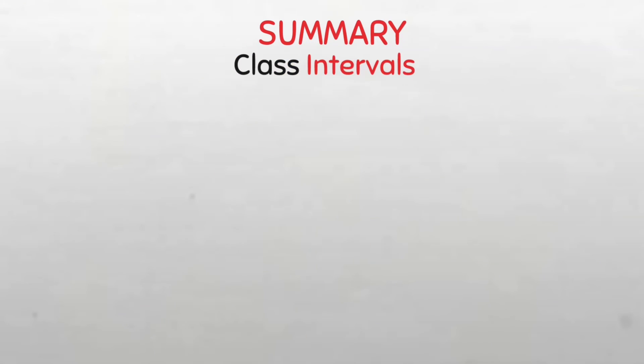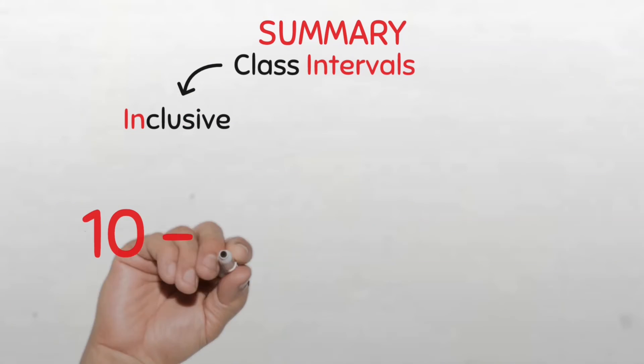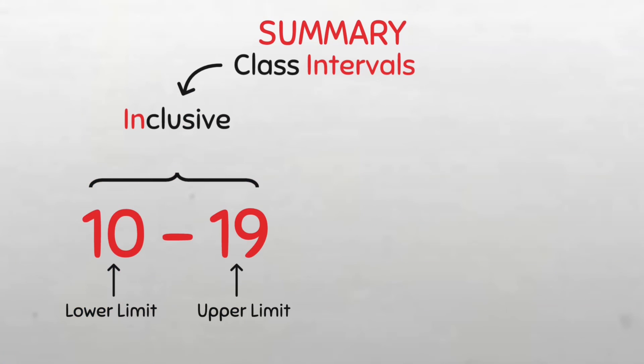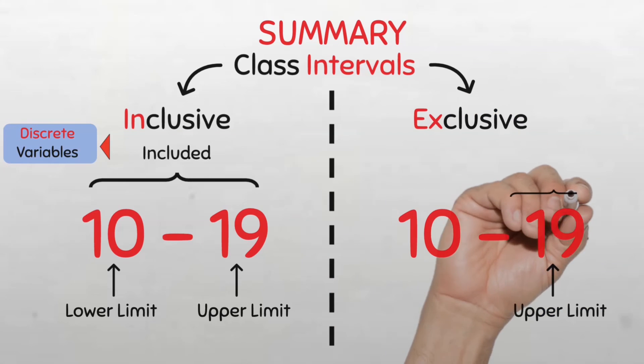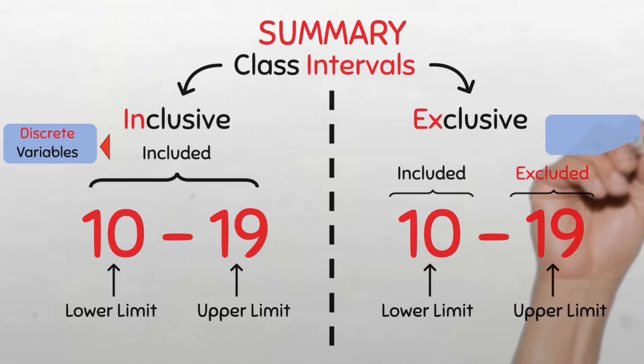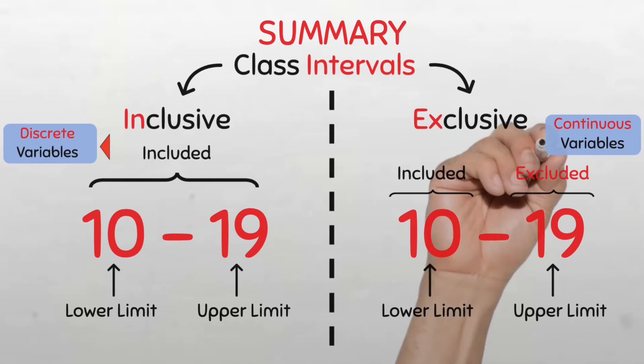So in summary, we said there are two types of classification. The inclusive classification, where both the lower and upper limits are inclusive in the classification, and this is useful when we are classifying discrete variables. And the exclusive type of classification, where the upper class limit is excluded from the classification and is useful when dealing with continuous variables.